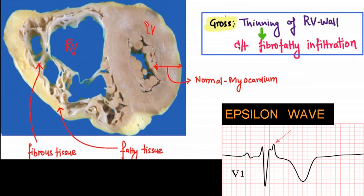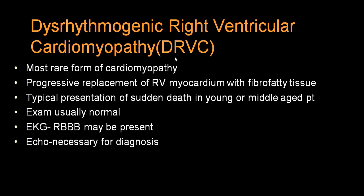Typical ARVD shows thinning of the right ventricle, fibro-fatty replacement, and an epsilon wave. This epsilon wave appears along with an ECG showing RBBB pattern. You can demonstrate right ventricular wall thinning and dilatation on echo. That is peculiar in a case of ARVD, which is sometimes also described as dysrhythmogenic right ventricular cardiomyopathy.